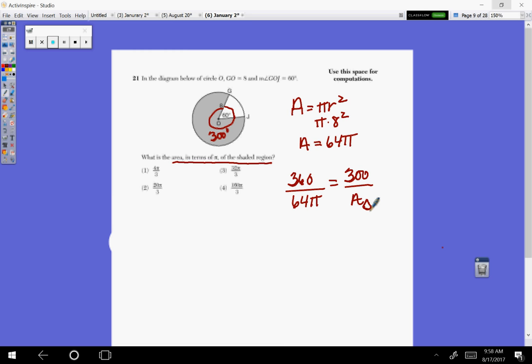Okay, so now when I do my cross product, 64 times 300 is 19,200 pi, and then equals A, area of the sector, times 360.